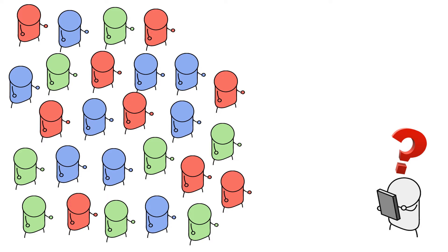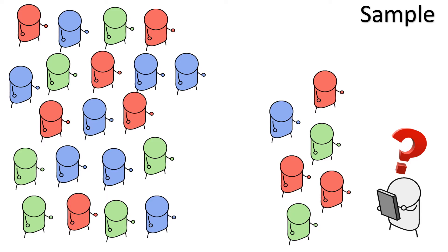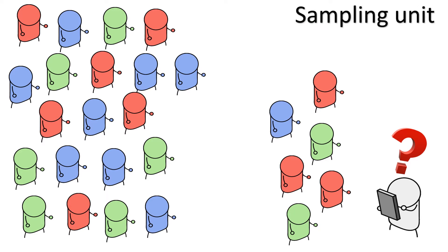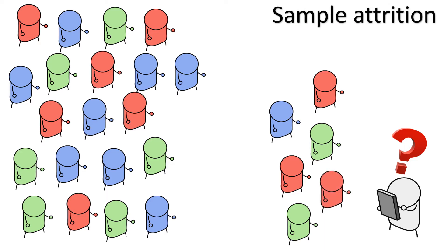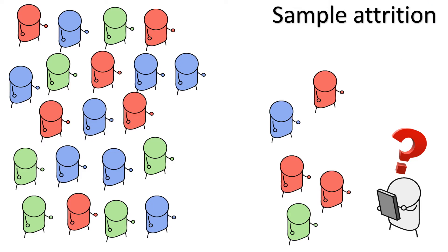The survey population is often too big for the researcher to study, so they need to study a smaller, more manageable group. This is called the sample. An individual within that sample is called a sampling unit, and if a sample member leaves, we call this sample attrition.